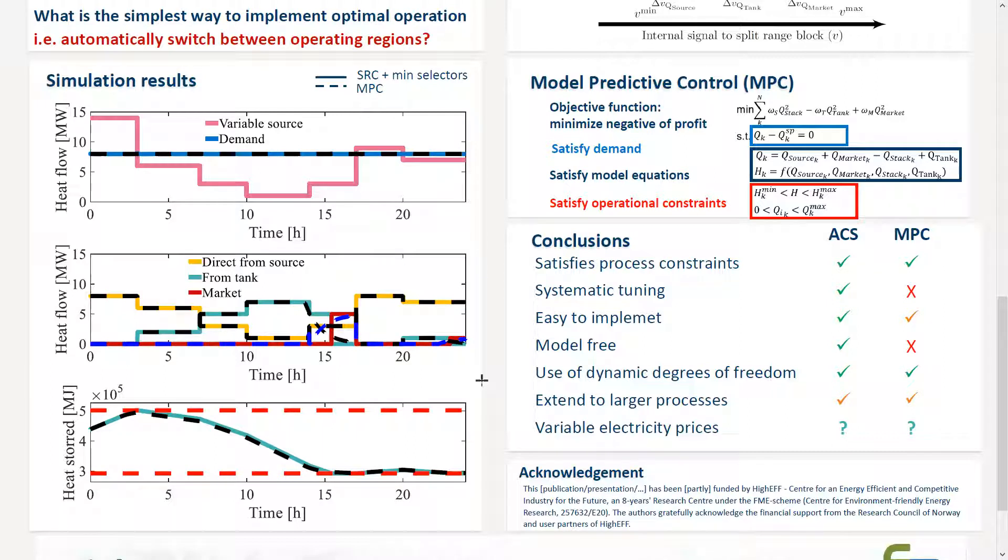In conclusion, both split-range control and model predictive control satisfy process constraints. However, there is no systematic tuning for model predictive control, and it's not that easy to implement in a real plant. Split-range control is model-free, and they are both able to use dynamic degree of freedom. That is the variable availability of the heat sources.